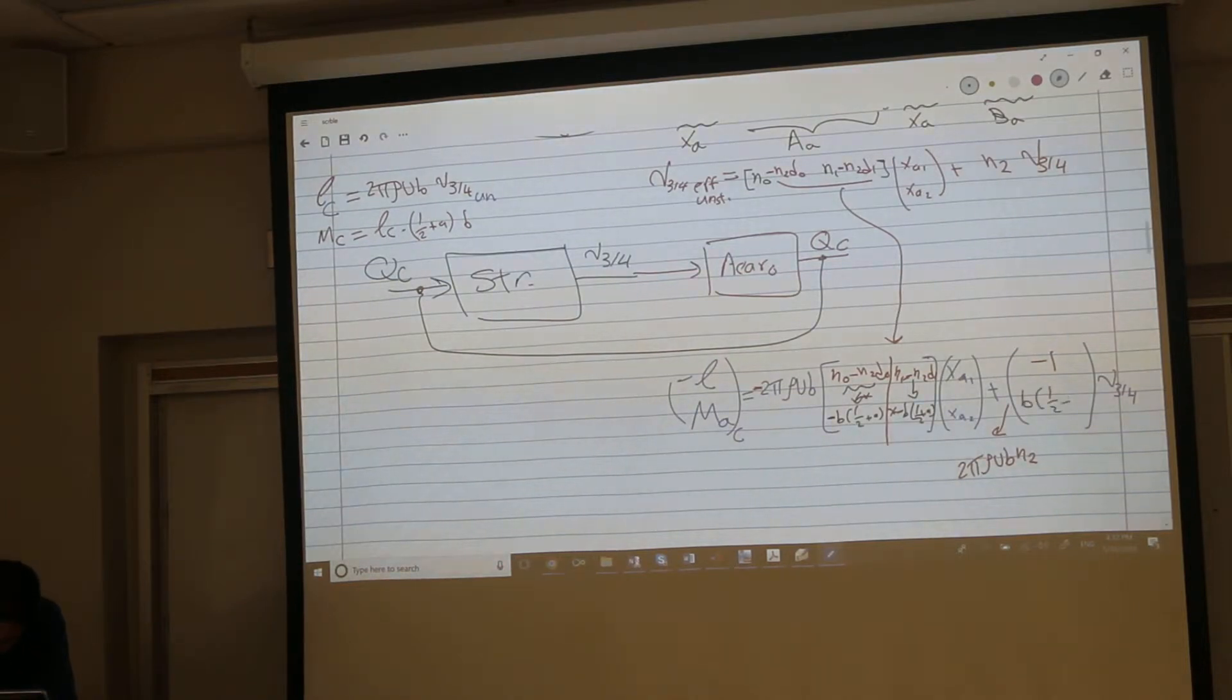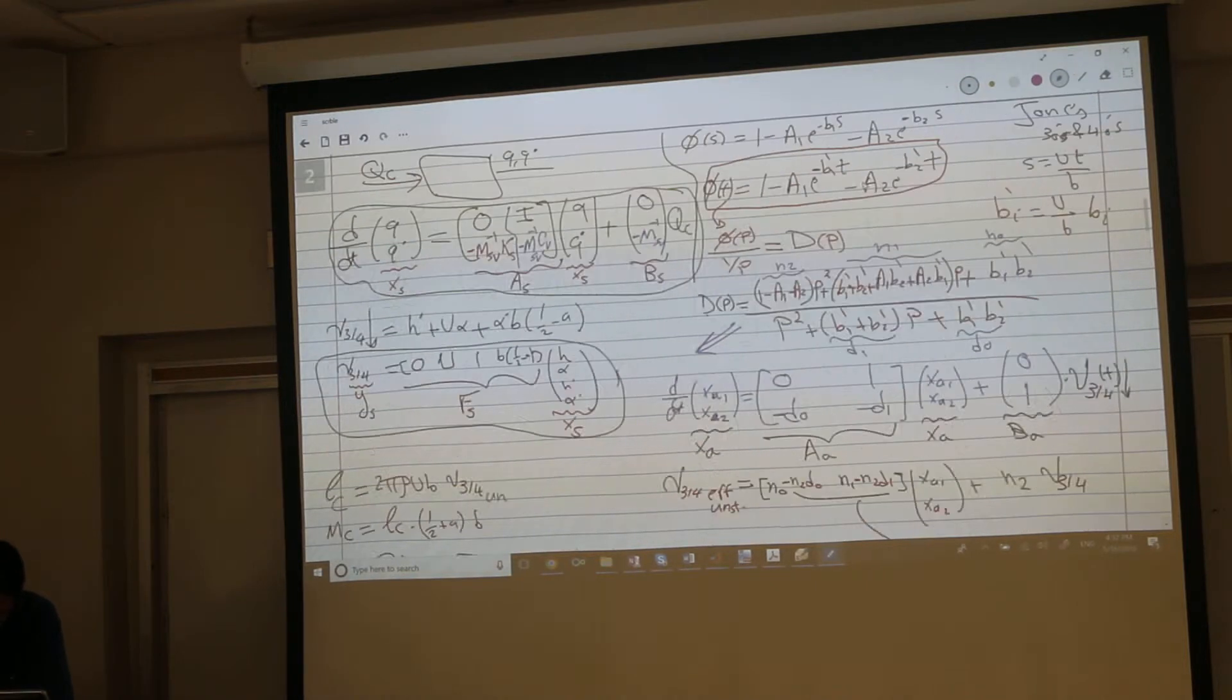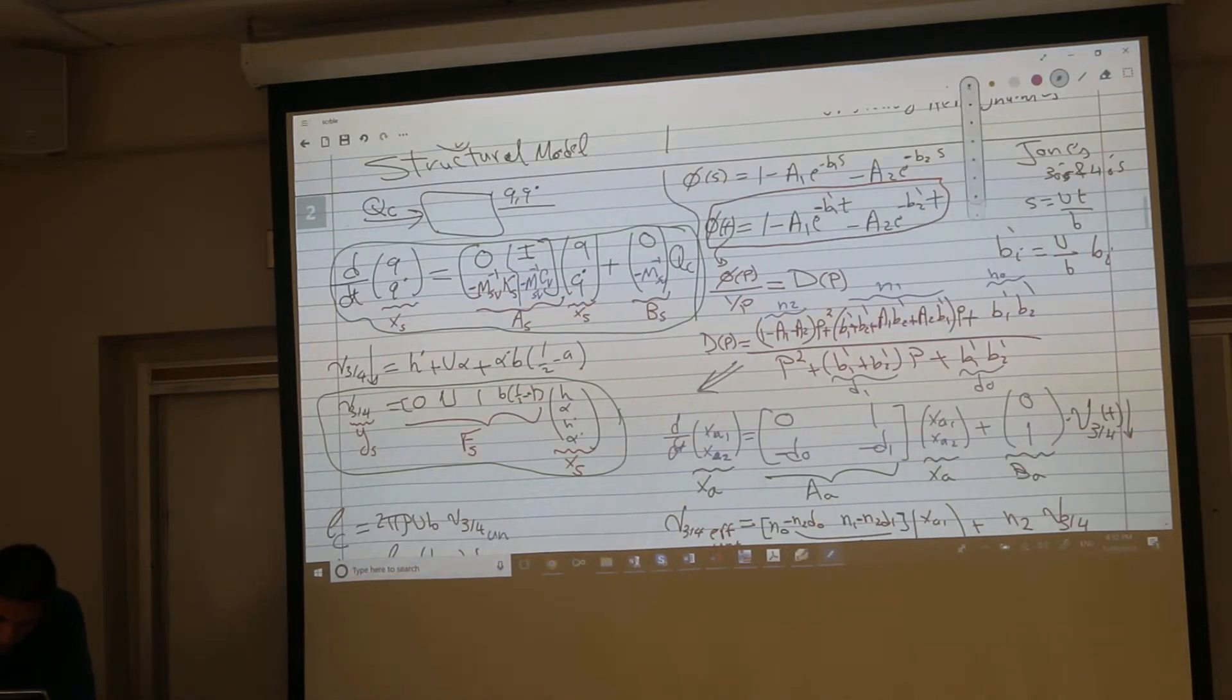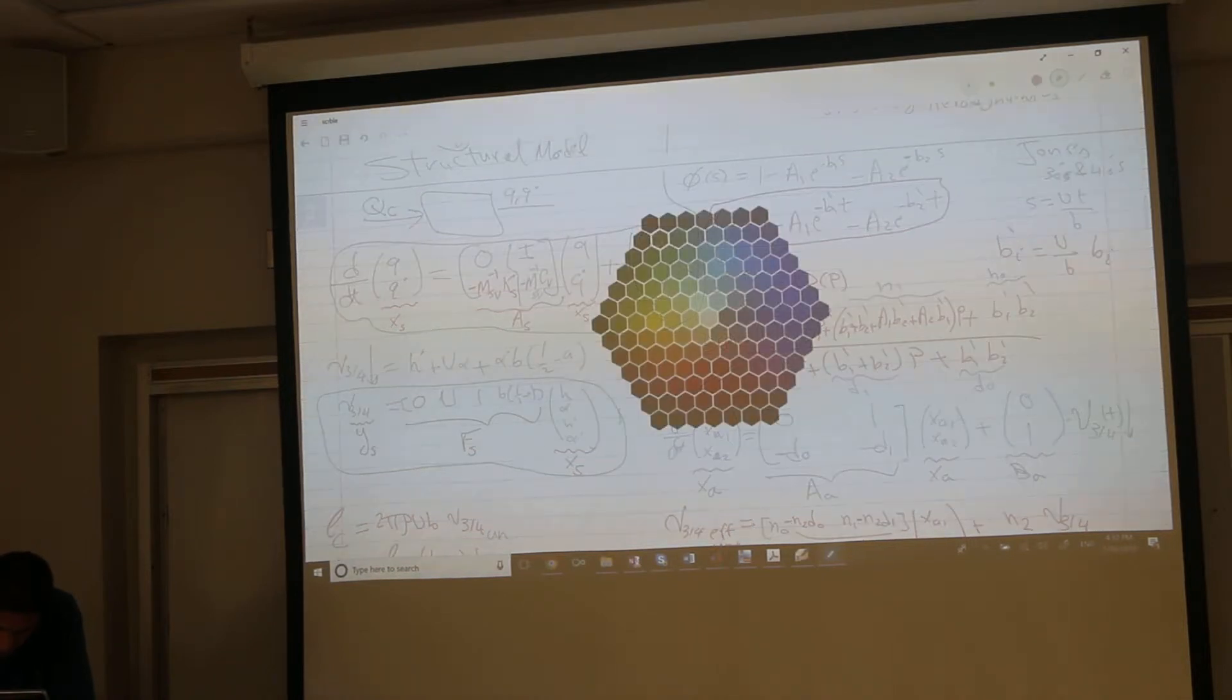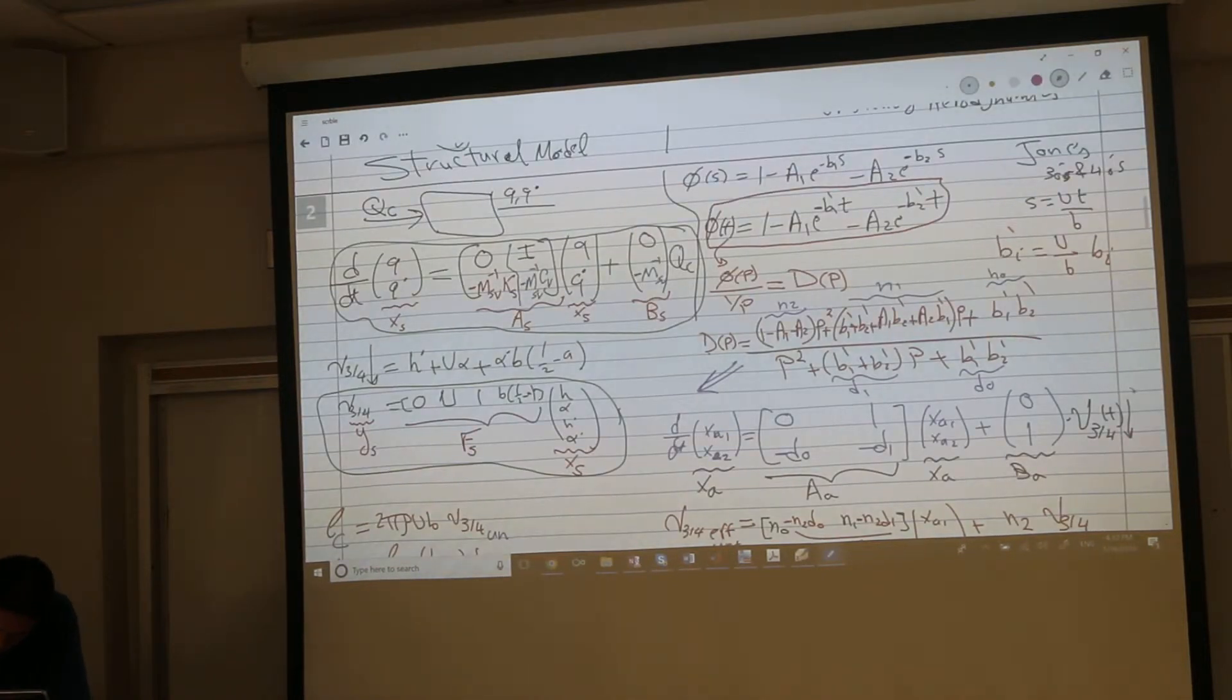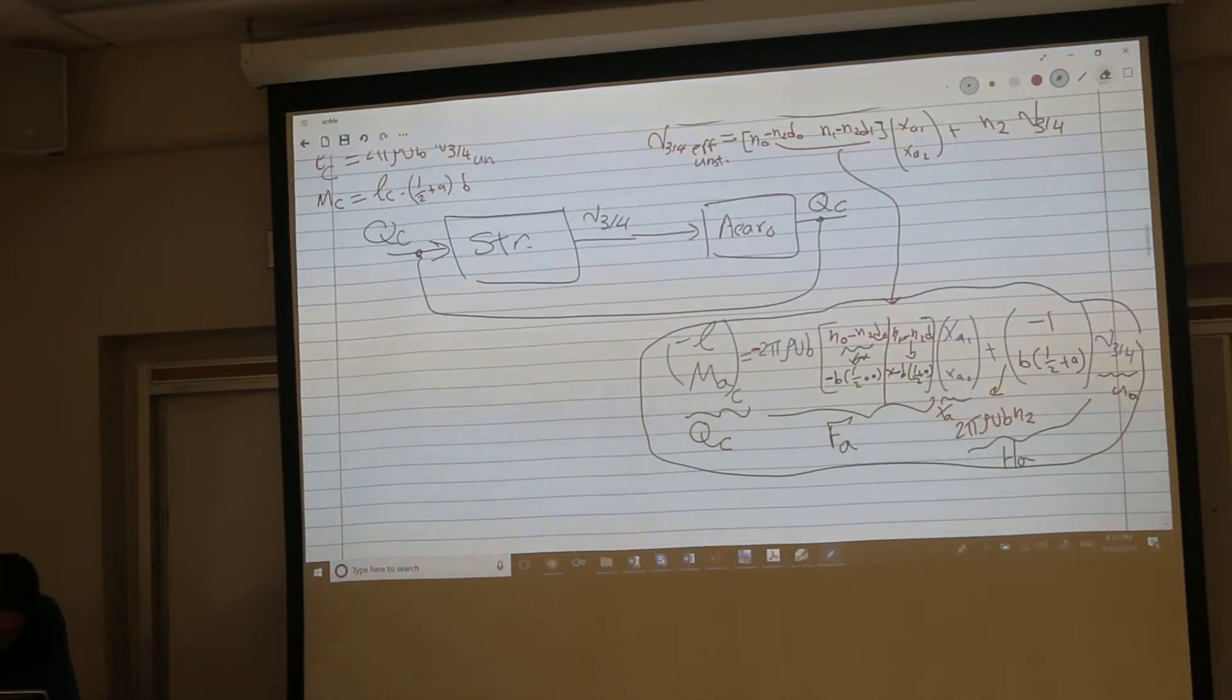Negative b times half plus a. Here will be b times half plus a. And this is our F aerodynamic, x aerodynamics, h aerodynamics, u aerodynamics. So this output equation along with this green, along with the state equation here. This is the state equation and the output equation.